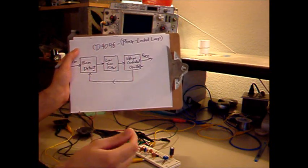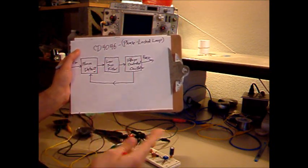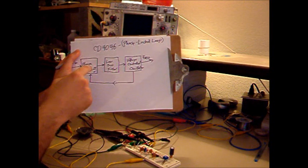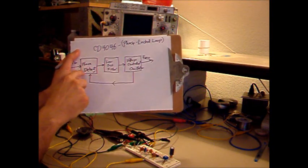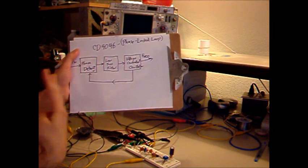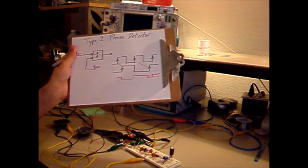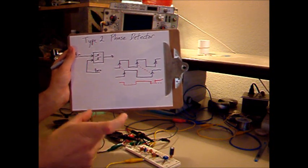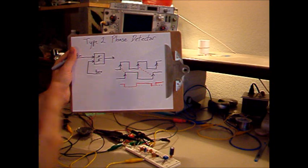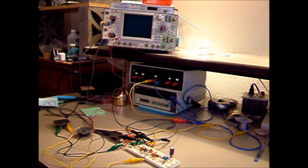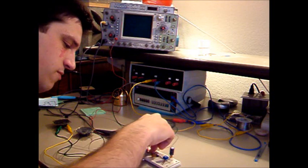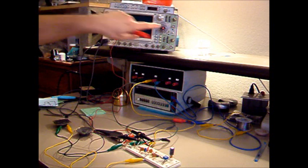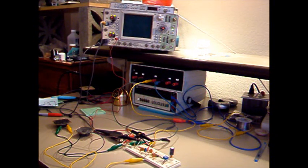This lack of phase difference is advantageous in the control loop because the low-pass filter introduces some phase shift, and removing the phase error between the signals makes it much easier to achieve a stable loop. As you saw with the type 1 phase detector, it was hard to get it to lock outside the middle frequency range. With the type 2, it's going to be much more forgiving in terms of lock range. So let's switch from pin 2 — the type 1 phase detector — to pin 13, the type 2 phase detector. Conveniently, the 4046 provides us with both.